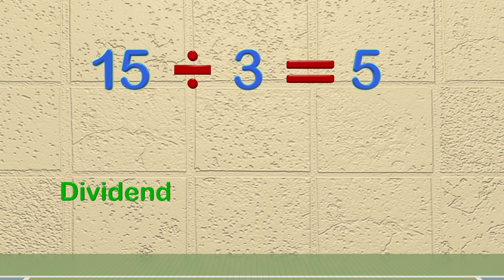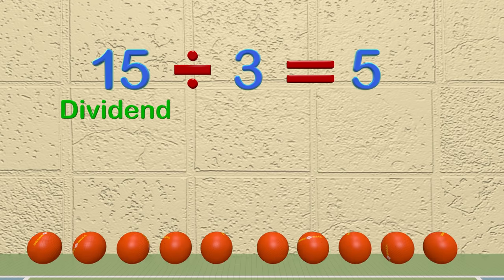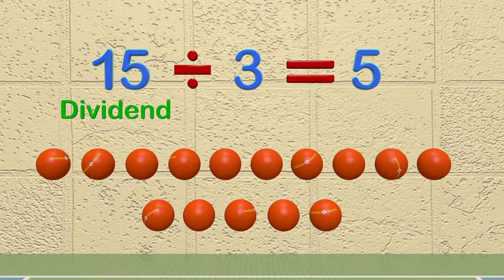The 15 in this equation is called the dividend. The dividend is the number you are dividing. So in this example, let's say we have 15 balls. The 15 balls are the dividend.